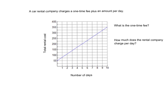A car rental company charges a one-time fee plus an amount per day. The one-time fee is your initial value. When looking at a graph, the initial value is the y-intercept — that is where it starts. We look on the y-axis for that point, and here it is $50. So the one-time fee, the initial value, the y-intercept — that's $50.